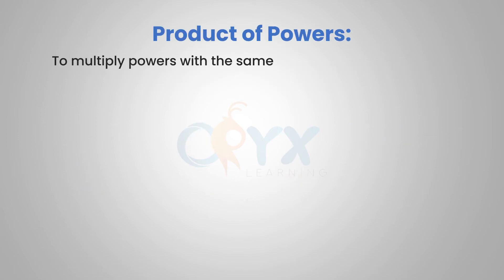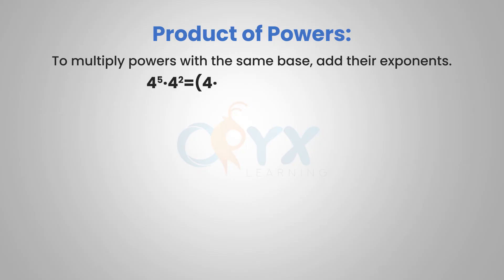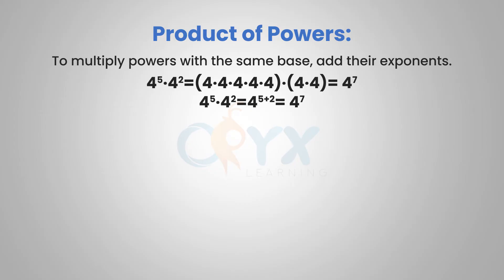The product of powers tells us that if we want to multiply powers with the same base, we can add their exponents. For example, if we have 4 to the 5th times 4 squared — two monomials multiplied together that have the same base — we can add their exponents, 5 plus 2, and get 4 to the 7th.